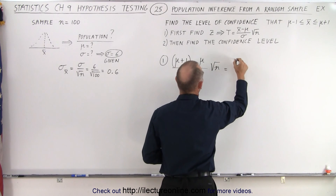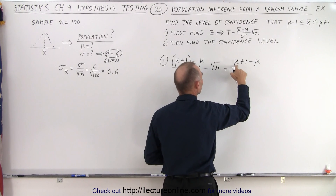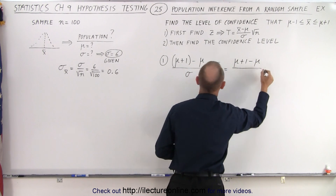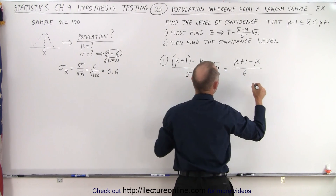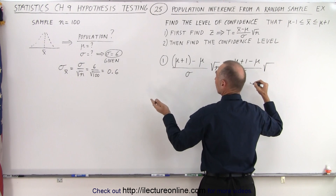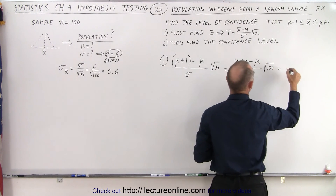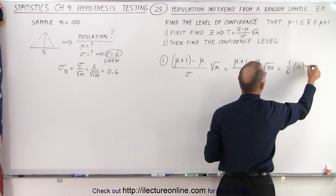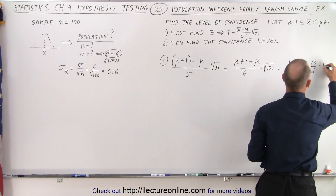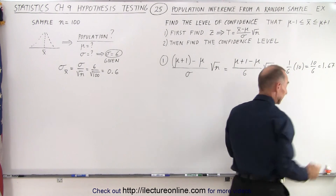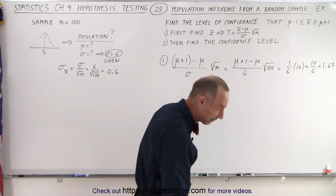So that becomes mu plus one minus mu, which is the population mean plus one minus the population mean, divided by the standard deviation which we said was six, multiplied by the square root of the sample size which is 100. These cancel out, so we have one over six times ten, which is ten divided by six, which equals 1.67.